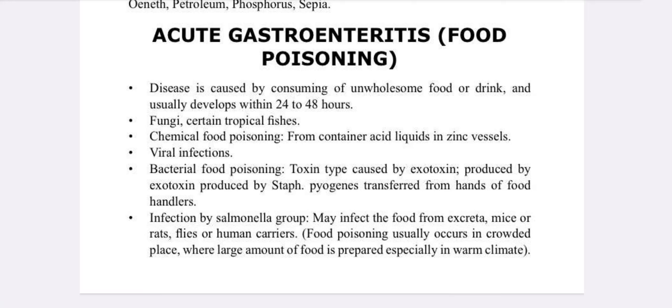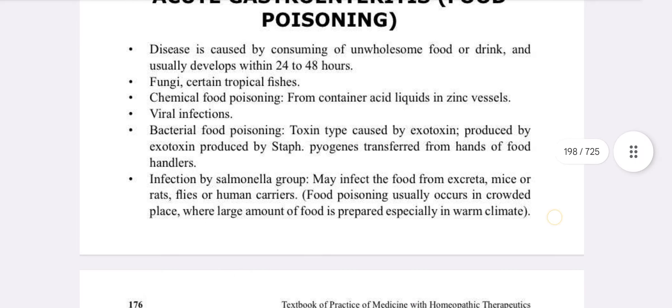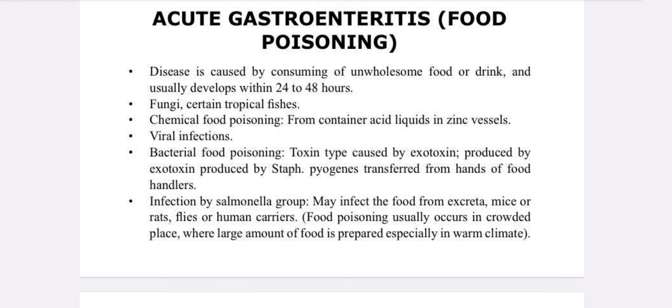Ten marks question on acute gastroenteritis and food poisoning. Food poisoning is based on diseases caused by consuming unwholesome food or drink, usually developing within 24 to 48 hours. Causes include fungi, certain tropical fishes, chemical food poisoning from acid liquid in zinc vessels, viral infections, and bacterial food poisoning — toxin type caused by exotoxins produced by Staphylococcus pyogenes, transferred from hands of food handlers. Infection by the Salmonella group may infect food from excreta of mice, flies, or human carriers.